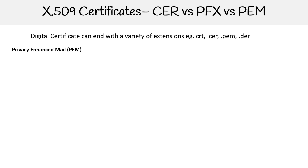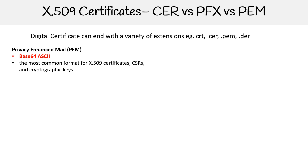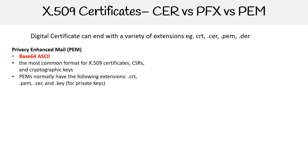The first is PEM — Privacy Enhanced Mail. This format is basically base64 ASCII, so you can open them up and they're very easy to read and edit. It's the most common format for X.509 certificates, certificate signing requests, and cryptographic keys. PEM files normally have extensions: .crt, .pem, .cer, and .key — specifically for private keys. But there's no hard rule about it, so just because something is PEM doesn't mean it ends with .pem.